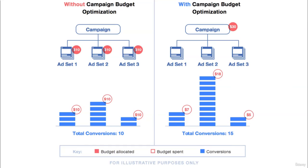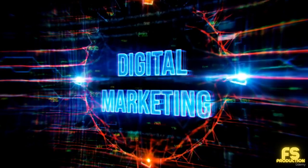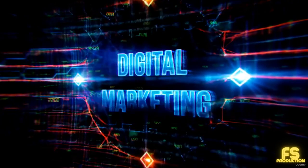As we see in the chart, without budget optimization we are giving the same $10 to all ad sets, instead of giving more budget to the ad set that is converting well. With campaign budget optimization enabled, Facebook automatically takes the budget and redistributes it to the better-performing ad sets. In this example, ad set 2 is the clear winner.